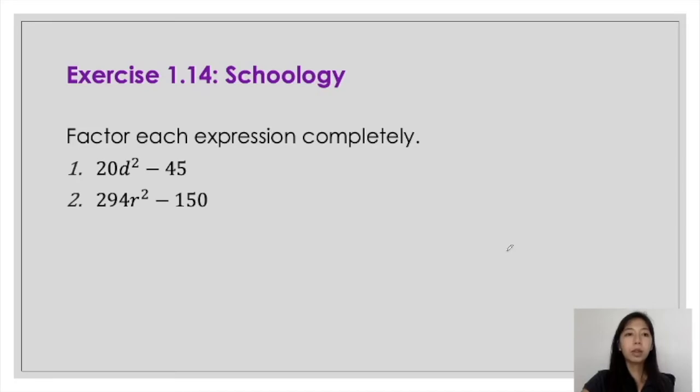So now, open Schoology and answer exercise 1.14, and do the same thing. You have to get the common factor first, if possible, before you can arrive with a difference of 2 squares.